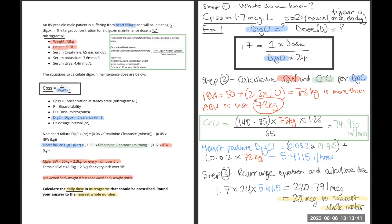And then put that into the equation that's got the black rectangle around it, and that is our final answer. So what we need to do is we need to calculate ideal body weight. Remember, you use ideal body weight, but if the actual body weight is lower, that is what you use. That's also highlighted in the question in red.